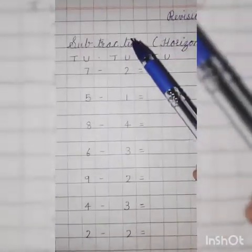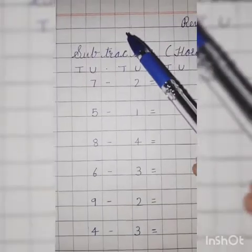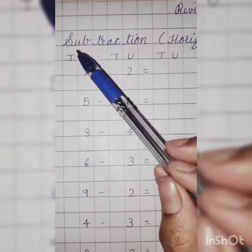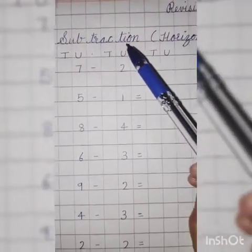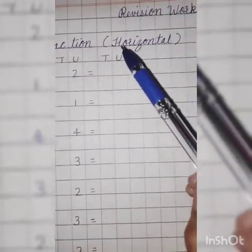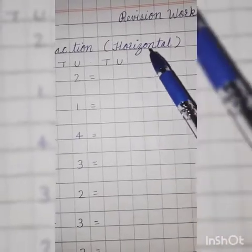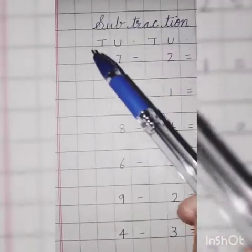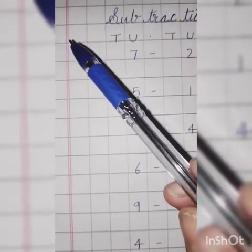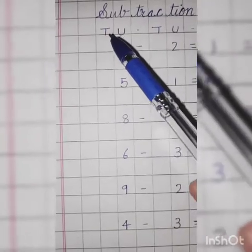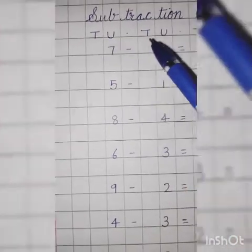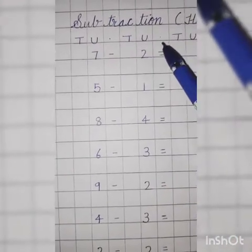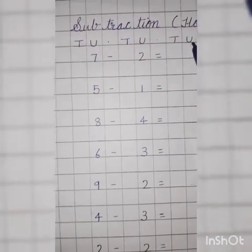Revision work. In the third row heading: subtraction means minus in a horizontal way. From the margin line leave two boxes. Write down T, U — T, U, T, U. U stands for unit or ones; T stands for tens.